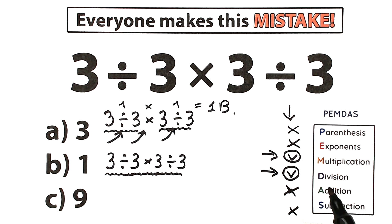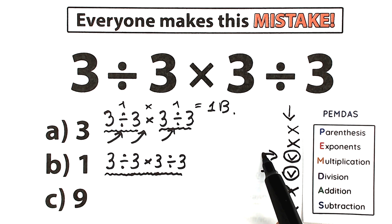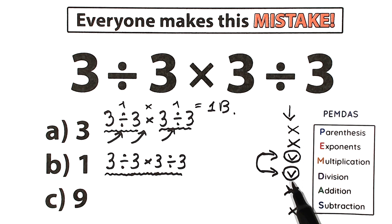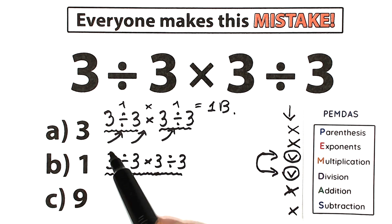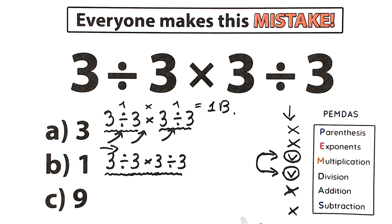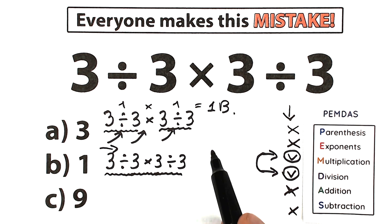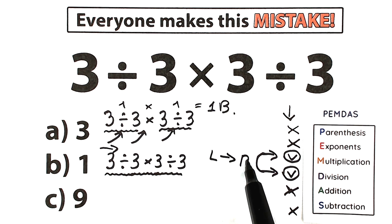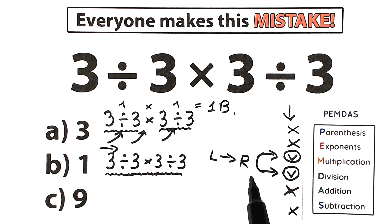What should we do first — multiply or divide? A lot of students argue about this, but here's the answer: according to PEMDAS, multiplication and division have the same priority, so we should perform them from left to right. From left-hand side to right-hand side, we scan for the first sign. The first sign from left to right is division, so we start with that.